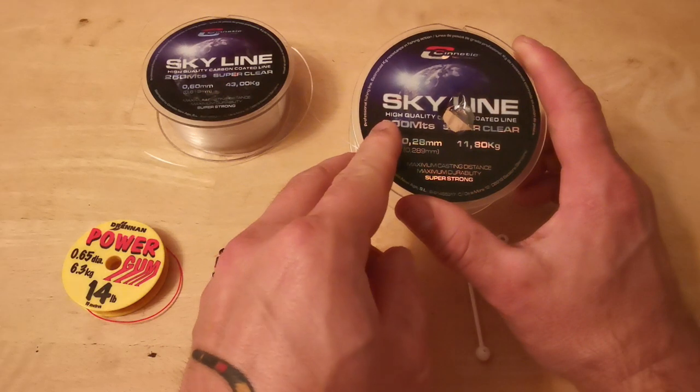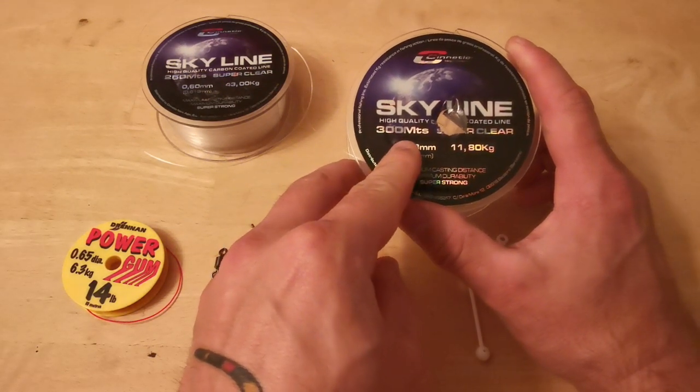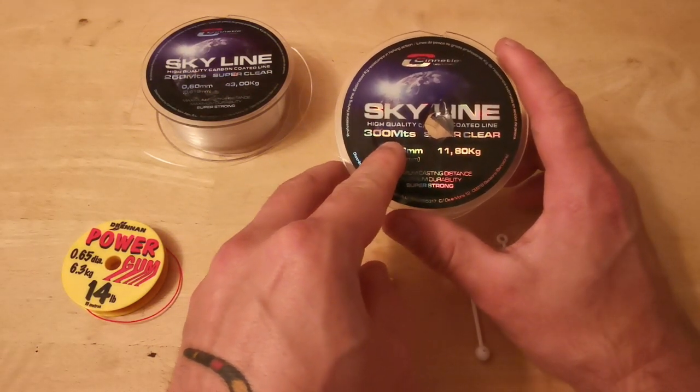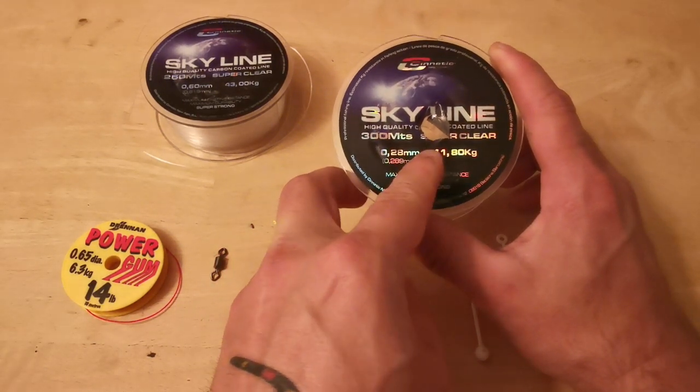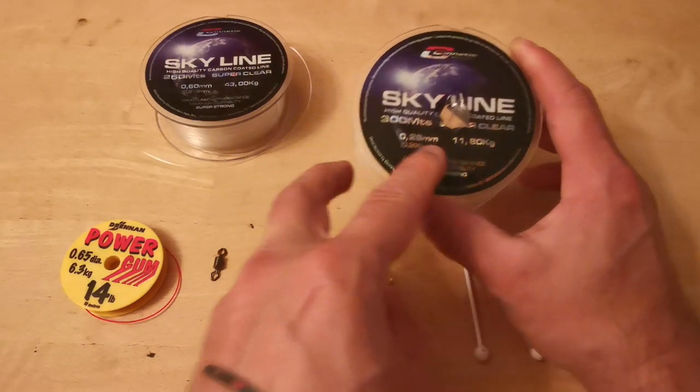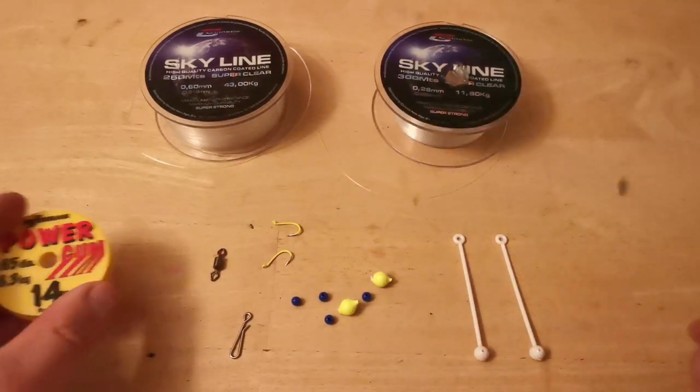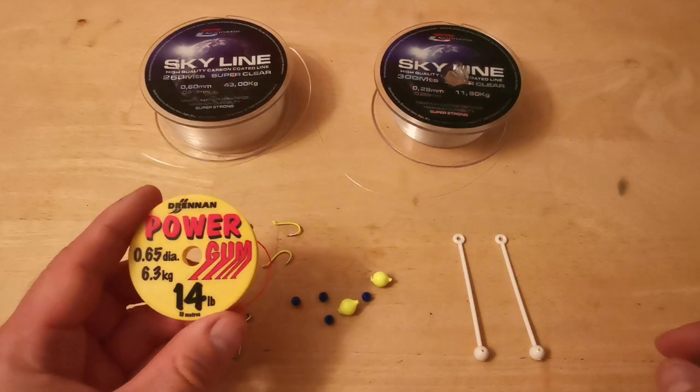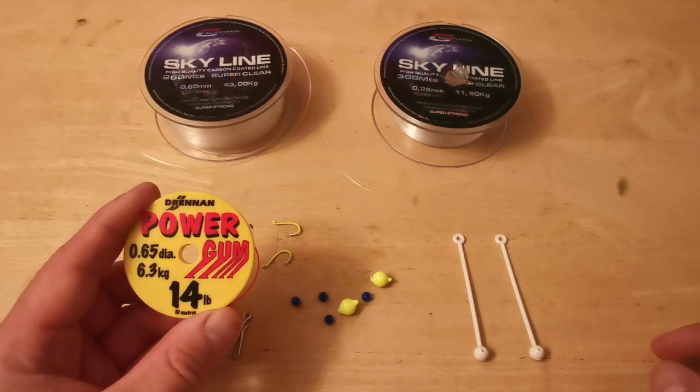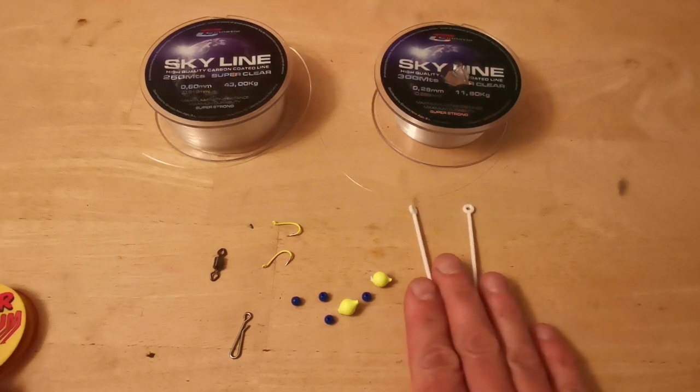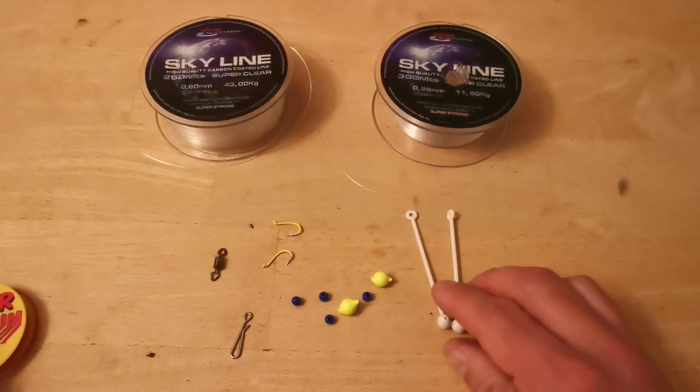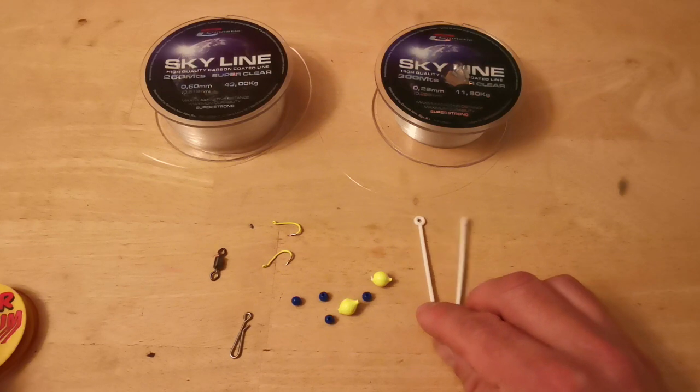Skyline is now available through this YouTube page, so message us if you're interested in Skyline and we can sort something out. You're going to need power gum for your sliding stops on the hooks snoods. Here you can see two Avis Booms - white, you can get them in different colours, can match it up with yellow.